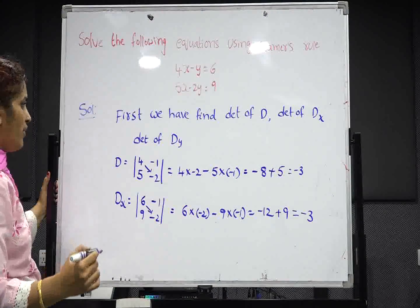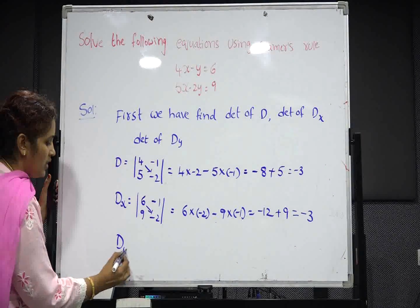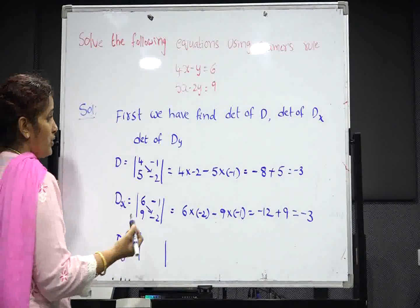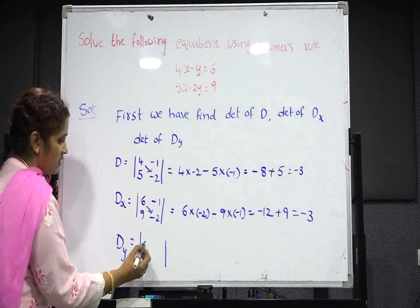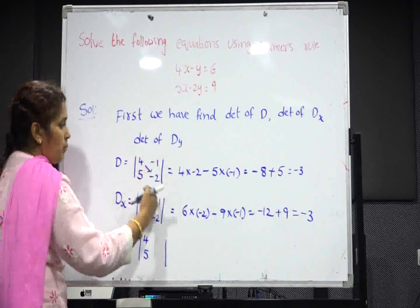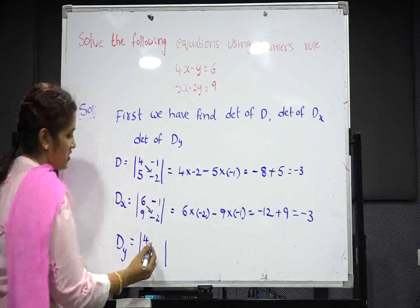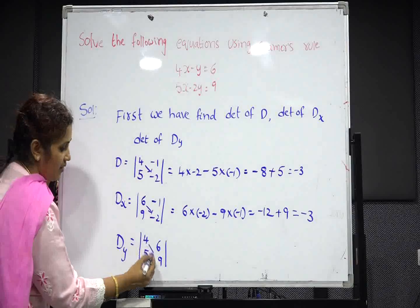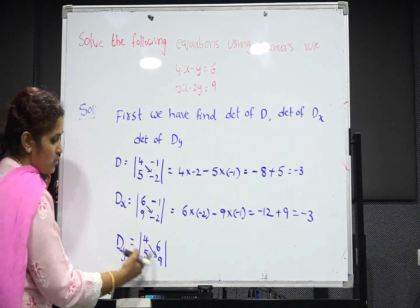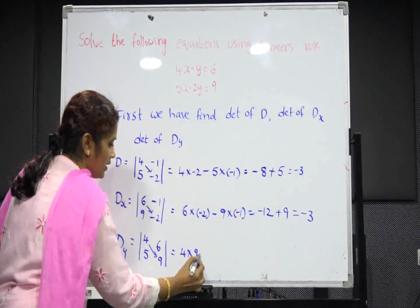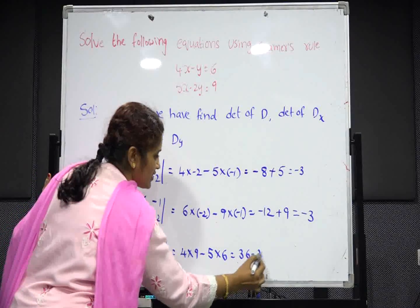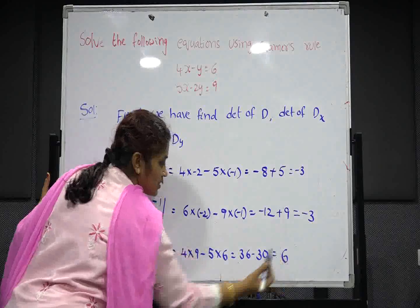In the same way, find the value of Dy. Write the first column in D as it is — that is 4 and 5. Replace the second column in D with the right-hand side constants — that is 6 and 9. Find the determinant of Dy: 4 multiplied by 9 minus 5 multiplied by 6, that is 36 minus 30, so the value of Dy is 6.